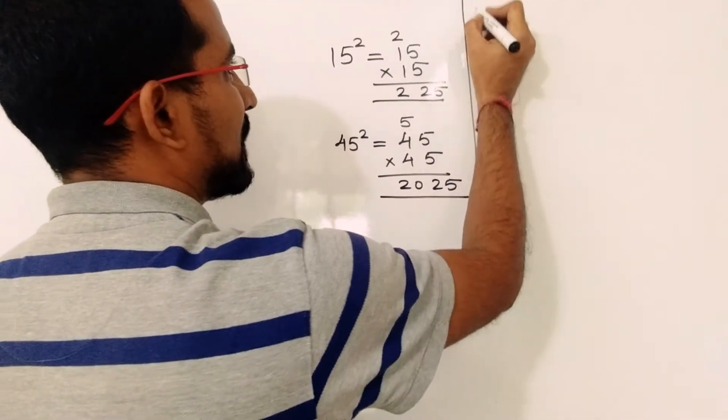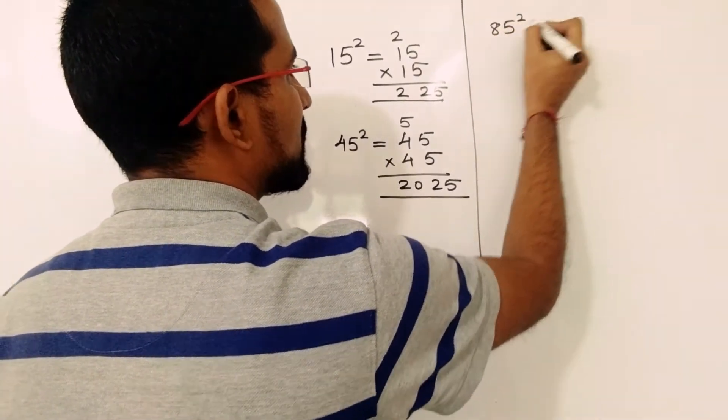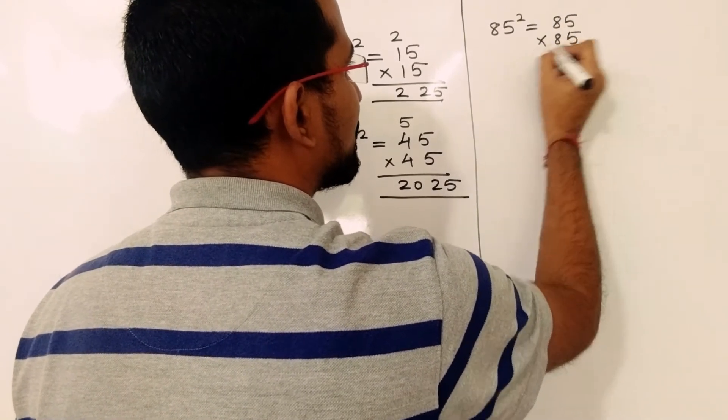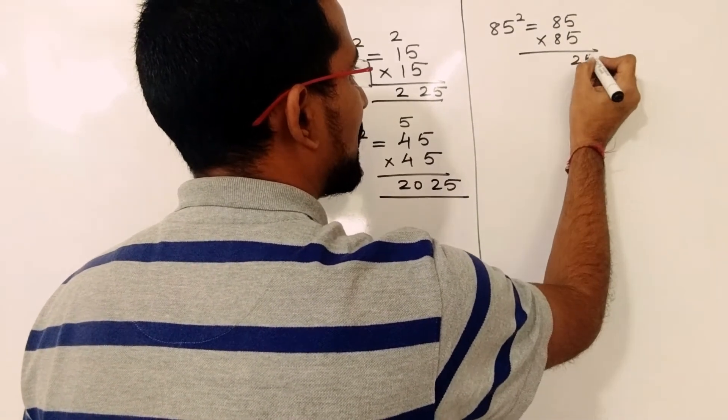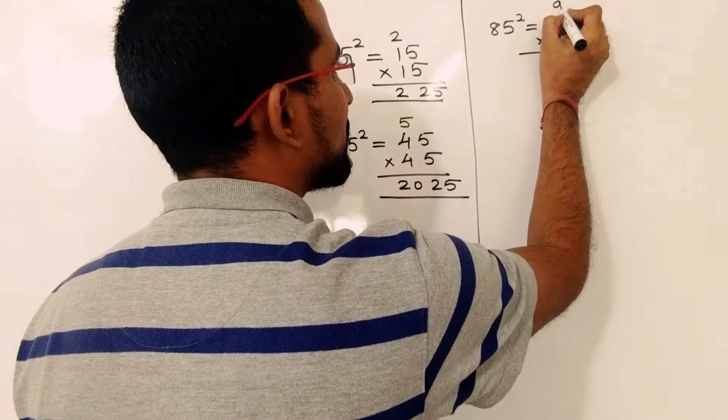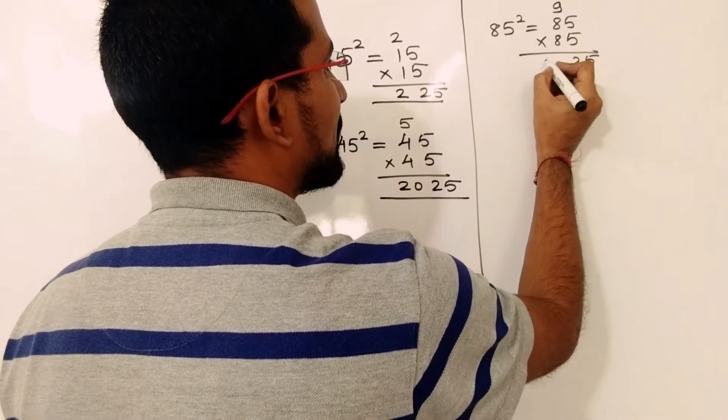We will take another example: 85 square. That is 85 into 85. So 5 into 5 is 25. Increase 8 by 1, so it will become 9. 9 into 8, that is 72. So 7225.